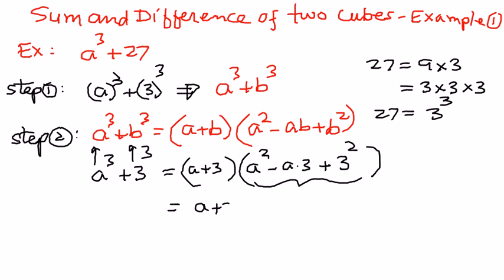So a plus 3 in the first set of parentheses, nothing changes. In the second set of parentheses, we have a squared minus 3a plus 9. Therefore, a cubed plus 27 equals (a plus 3) times (a squared minus 3a plus 9).